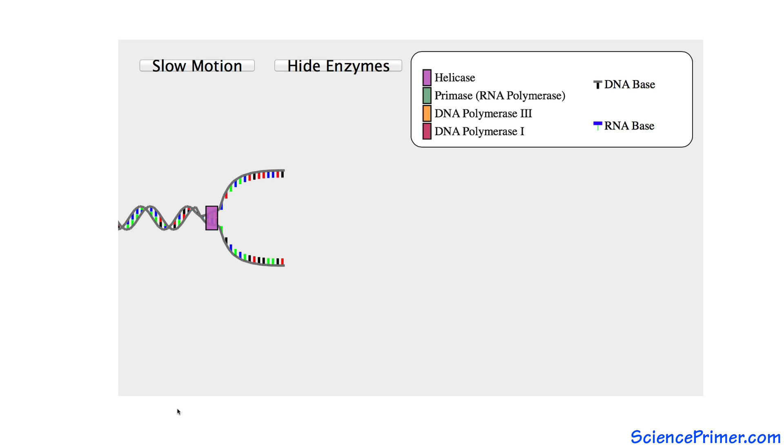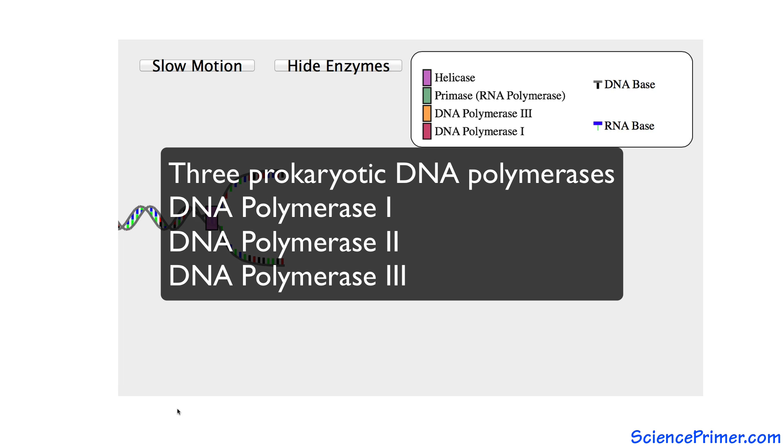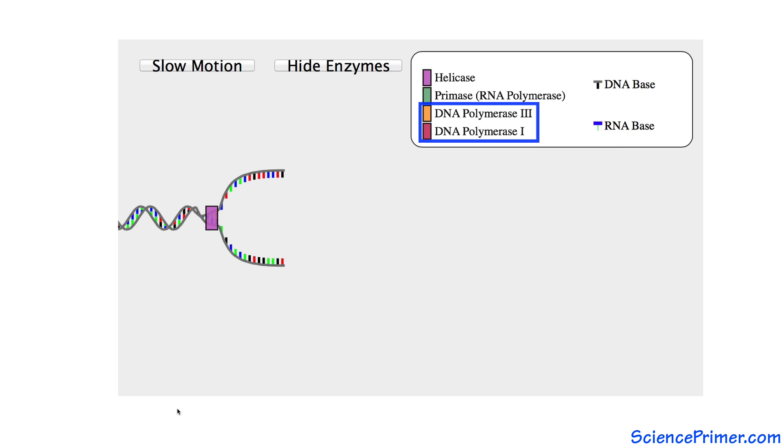Prokaryotic cells contain three different DNA polymerases, each with slightly different activities. The two required for DNA replication are DNA polymerase III and DNA polymerase I.